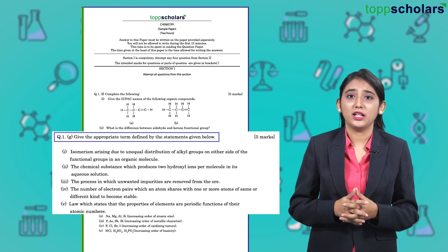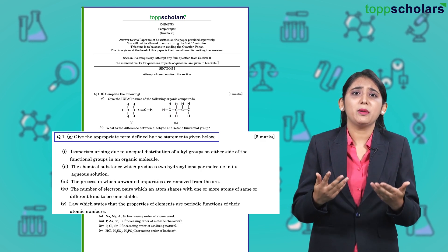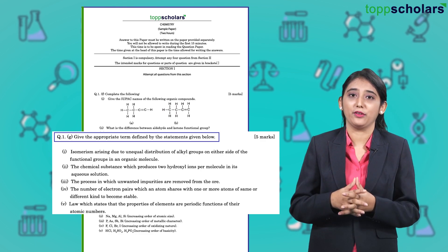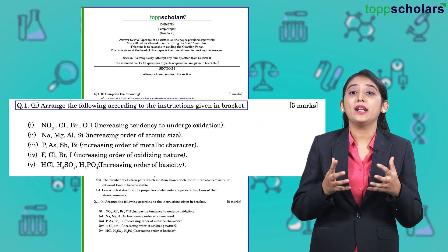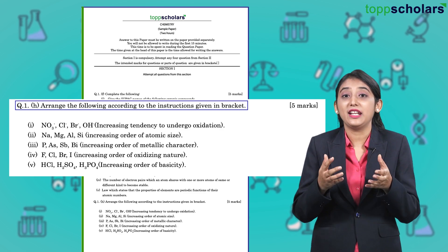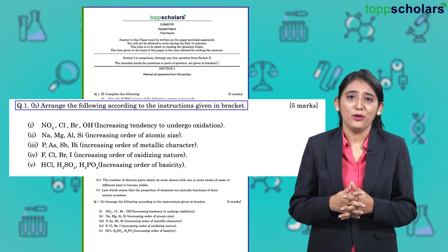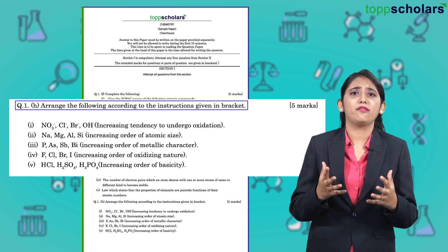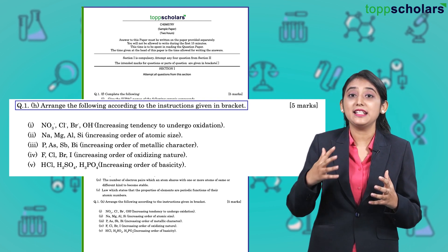Question 1G comprises of give the correct term. Here you may be provided with a complete definition and you need to identify the correct term. Question 1H comprises of questions which are based on arrangement, that is arrange in the correct order. For example, 4 to 5 chemical species may be given to you and you need to arrange them in the correct increasing or decreasing order of their reactivity.